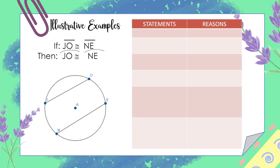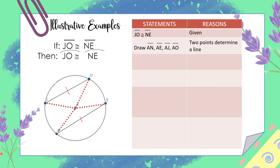We have the two-column proof. Left side are the statements, right side are the reasons. First statement: JO is congruent to NE — given. Draw segments AN, AE, AJ, and AO because two points determine a line. Segment AN is congruent to segment AE, congruent to segment AJ, and congruent to segment AO — radii in a circle are congruent.